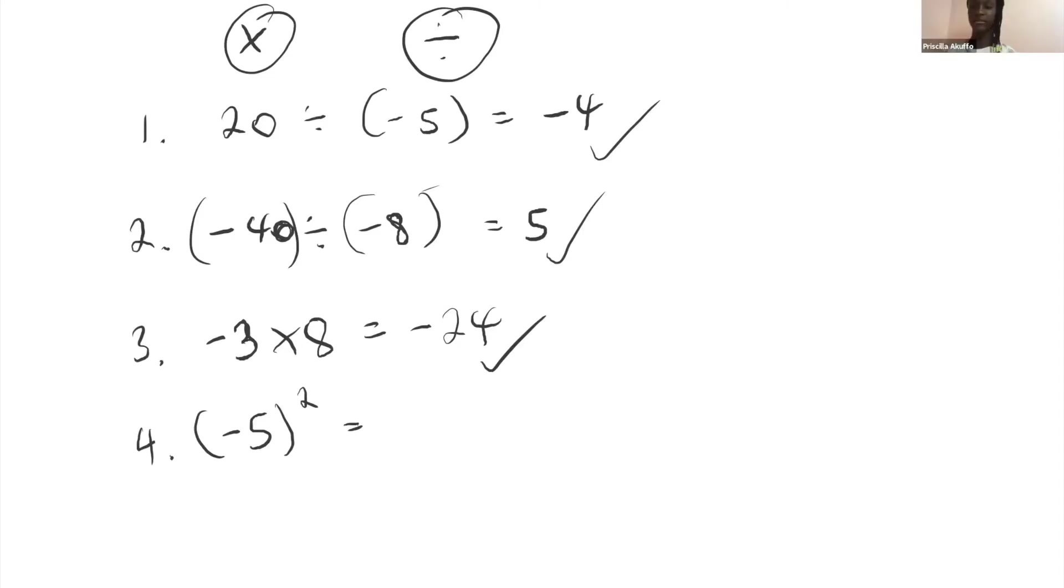Minus 5 times itself twice. So minus 5 times minus 5. Good. So minus 5 times minus 5. And so what would the answer be? 25. Good. And what rule are you using there? A negative times a negative is positive. Awesome.